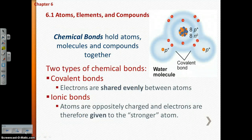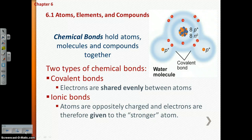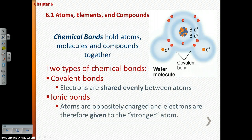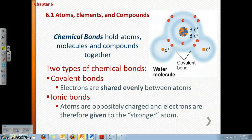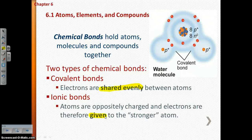We've talked about single atoms, but atoms rarely exist just by themselves — they want to bond with other substances. A chemical bond holds atoms, molecules, and compounds together. There are two types of chemical bonds: covalent or ionic. If the electrons are being shared evenly, that is called a covalent bond. If the electrons are being given to the stronger atom, that is an ionic bond.